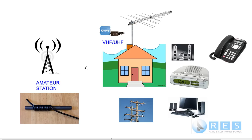Clock radios are not supposed to pick up amateur transmissions on 14 MHz. Sound systems are not supposed to pick up radio frequency signals, neither are telephones or computers. Power lines are not supposed to conduct radio frequency energy, but they do. So we're going to talk about these types of problems briefly and what you might do to fix some interference problems.